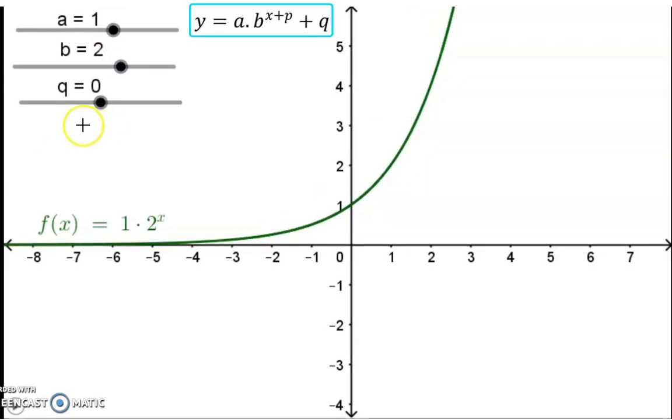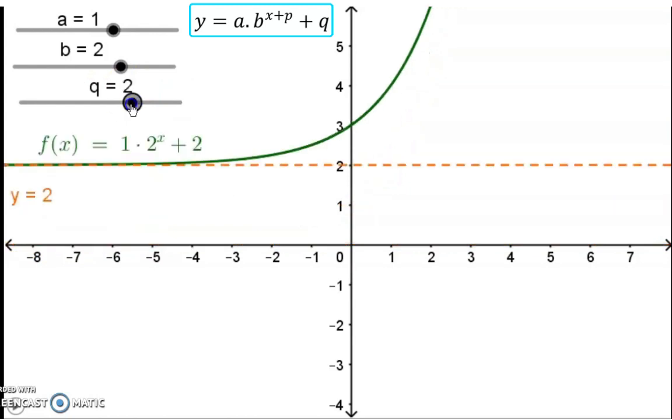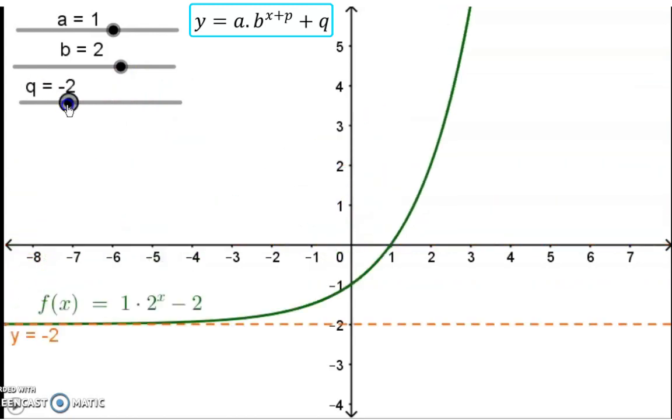Lastly, we are going to focus on the influence of the q value, and just like with all the other graphs, it indicates the vertical translation. But first, you need to remember that an exponential graph also has one asymptote. It has a horizontal asymptote, which at the moment is at y is equal to 0. This horizontal asymptote, along with the function, will move up or down as soon as a q value is added.